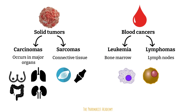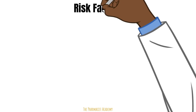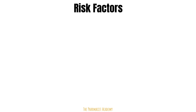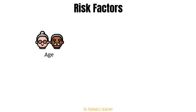Whether a solid or blood cancer, there are shared risk factors that lead to the mutations of the proteins that control cell growth and cell death. Cancer is known as the disease of the old, so the older you are, the higher your risk is. This is because of an accumulation of mutations over the years, and cancer does not occur due to one single mutation. Next, cigarettes — they have over 70 chemicals that can cause cancer, referred to as carcinogens. Tobacco smoke is a risk factor for over 18 different types of cancers.